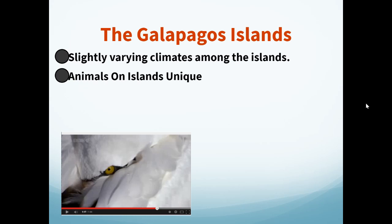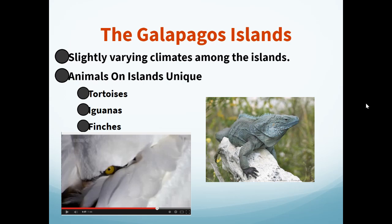Each island had somewhat of a varying climate, which would have changed the environment those organisms ended up living in. He observed things like tortoises, iguanas, and finches — all species that somewhat resembled each other but had slight differences between each of the organisms that lived on the varying islands.